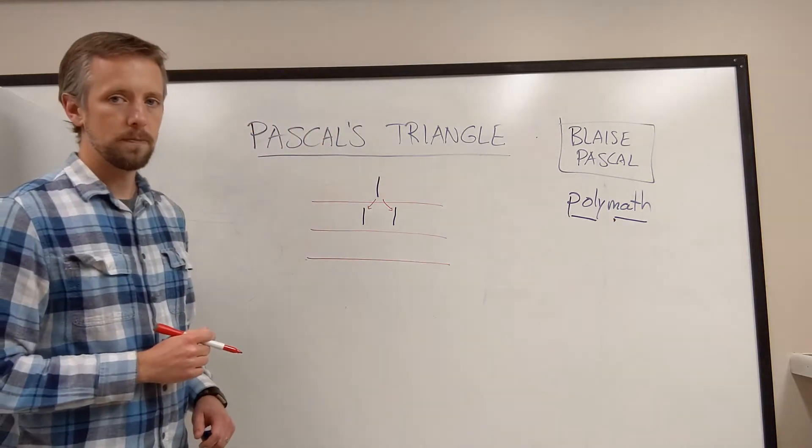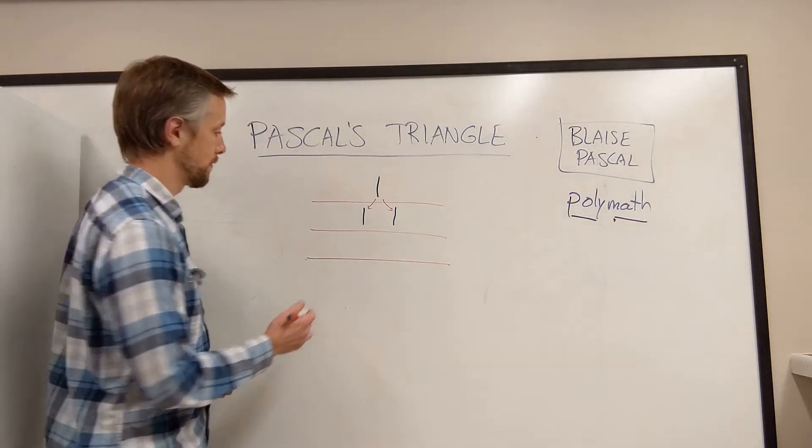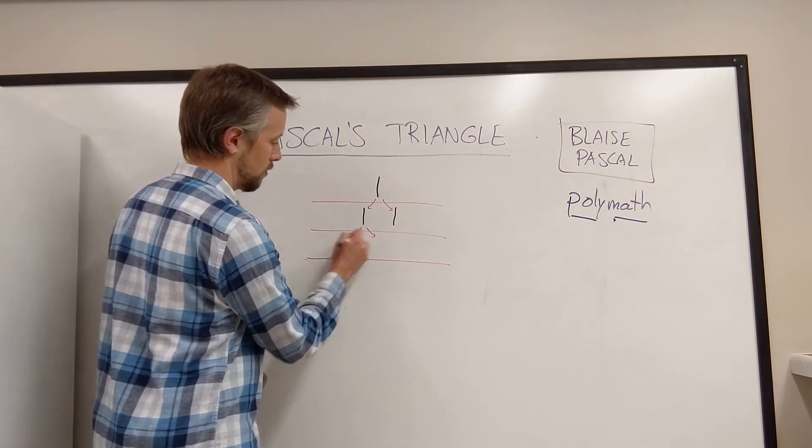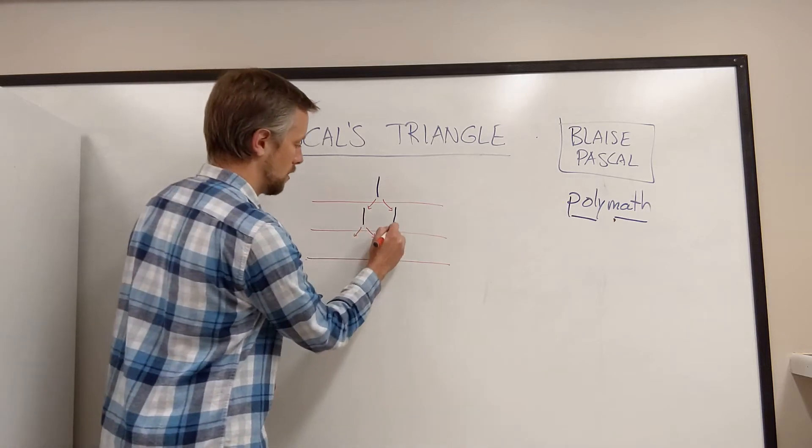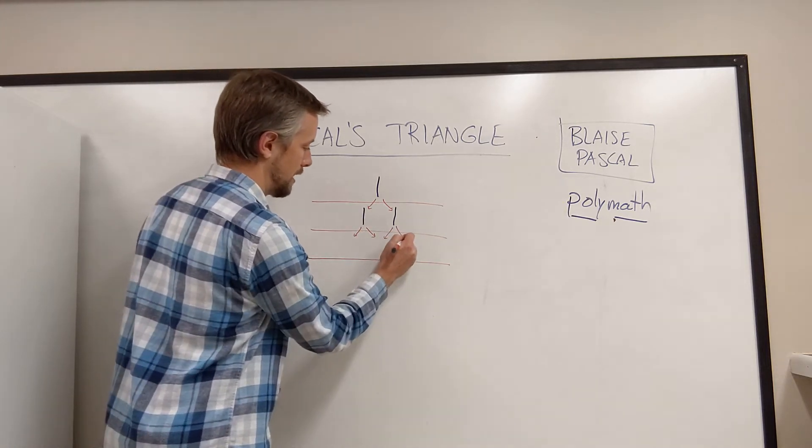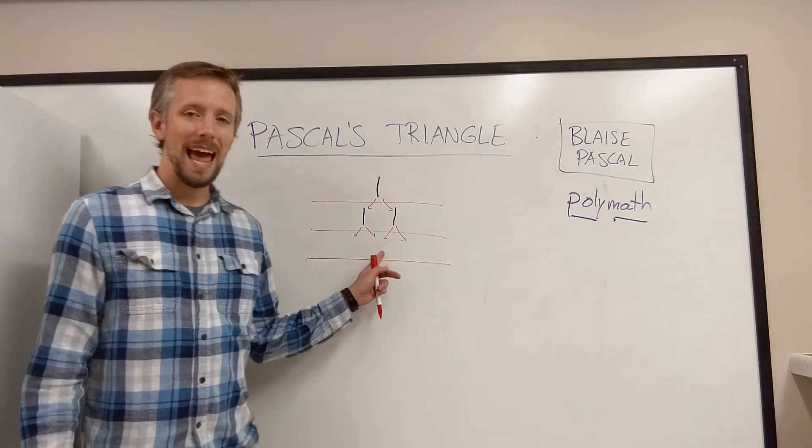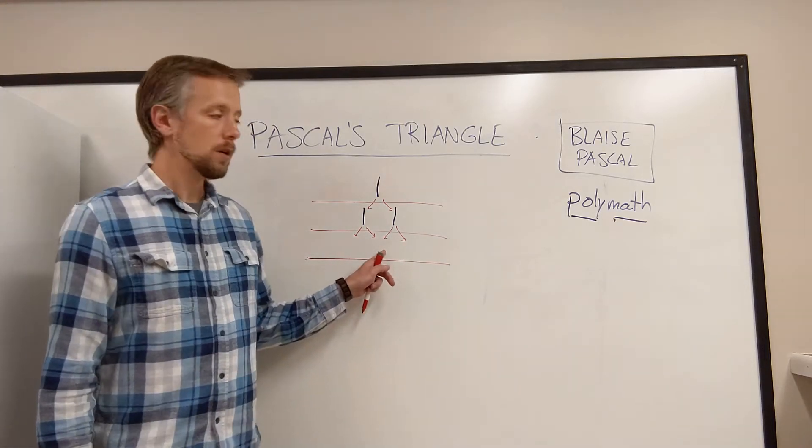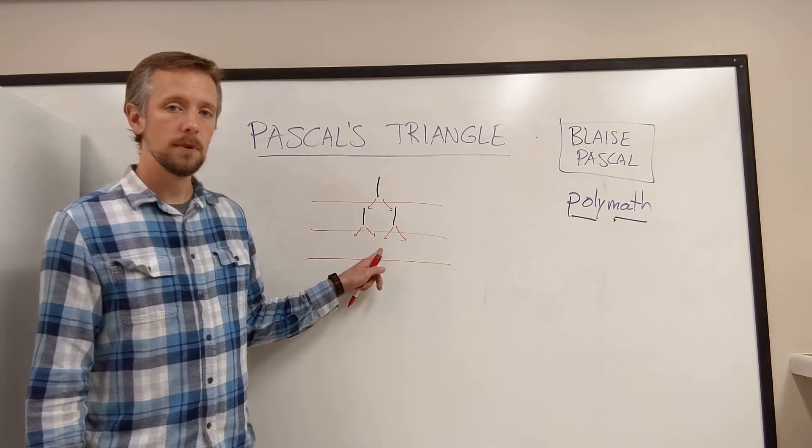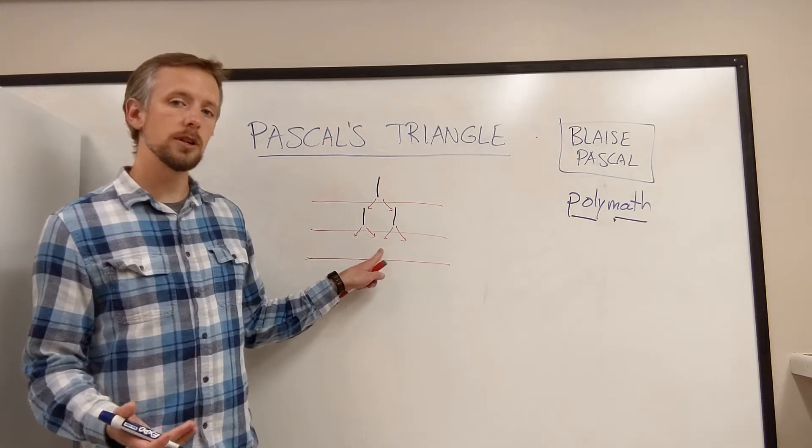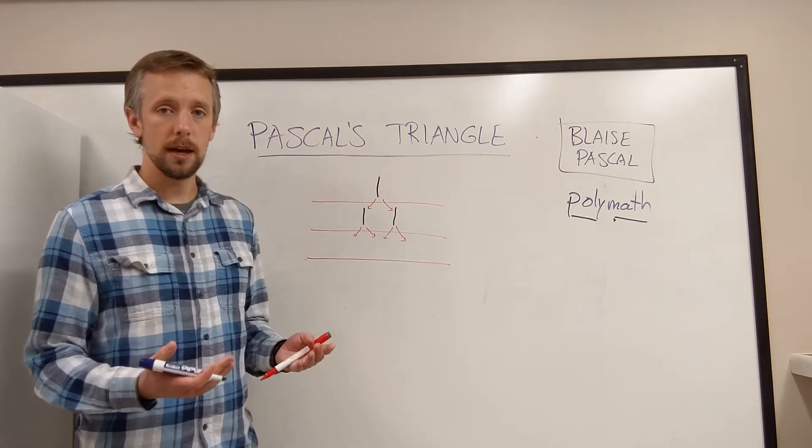Let's build the next row. We'll do the same pattern. This 1 goes down and to the left and down and to the right, and this 1 also goes down and to the left and down and to the right. Something happens here in the third row. We have a collision. Both 1s are going into the same spot, and when we have a collision in Pascal's Triangle, we add the numbers together.